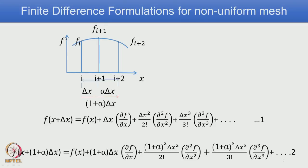This is graphically shown here: a situation with a function where i is a point of interest, and i+1 and i+2 are neighboring points. Unlike the uniform case, the distance between i and i+1 is delta x, and the distance between i+1 and i+2 is alpha times delta x. So from point i, the point i+2 is at a distance of (1 + alpha) delta x. We follow the same procedure and write down the Taylor series expansion formula, but now with alpha as a coefficient for delta x.